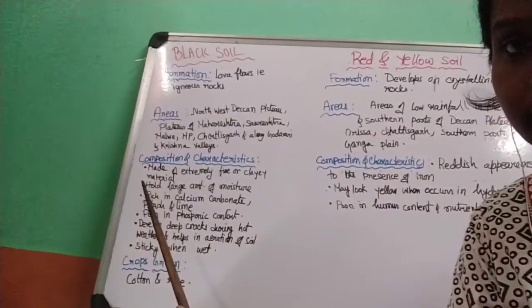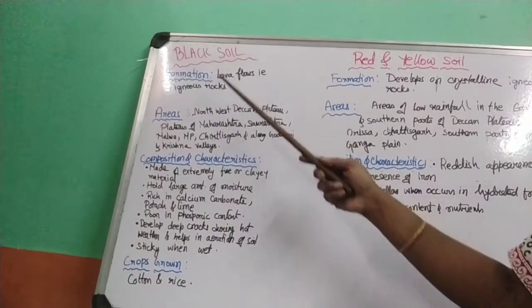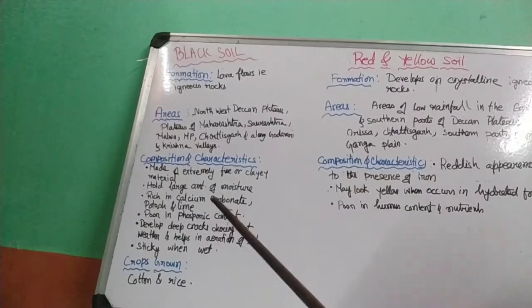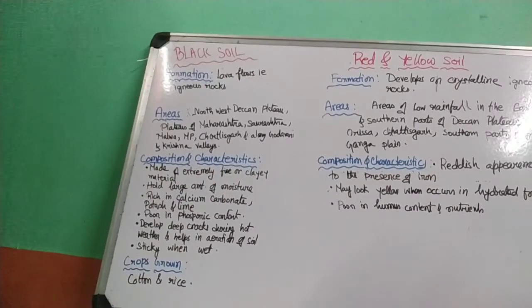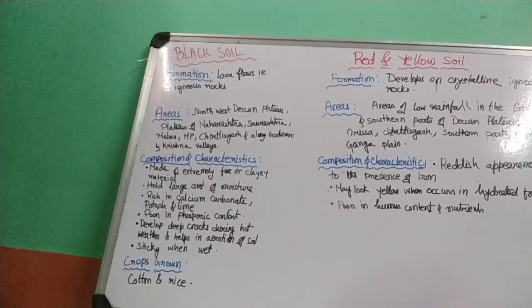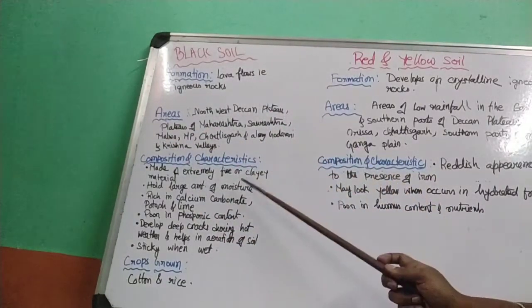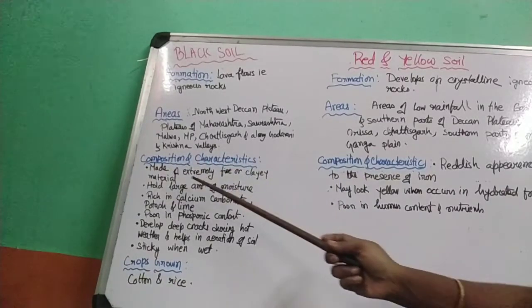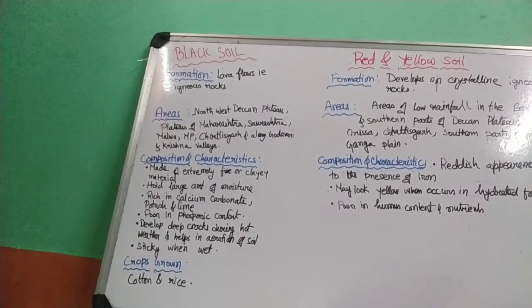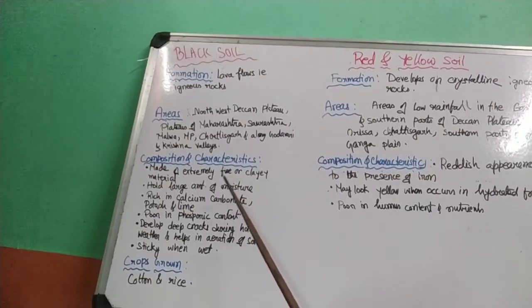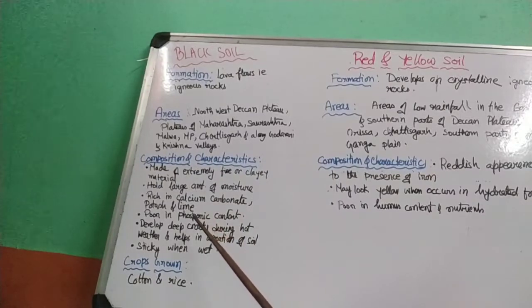Black soil is formed by the solidification and crumbling of lava. Lava is the black molten material that comes out from underneath the earth. When this lava cools and solidifies, it decomposes into rock particles, giving us black soil. Its composition includes extremely fine clay material, which allows it to hold large amounts of moisture. It is rich in calcium carbonate, potassium, and lime, but poor in phosphoric content.